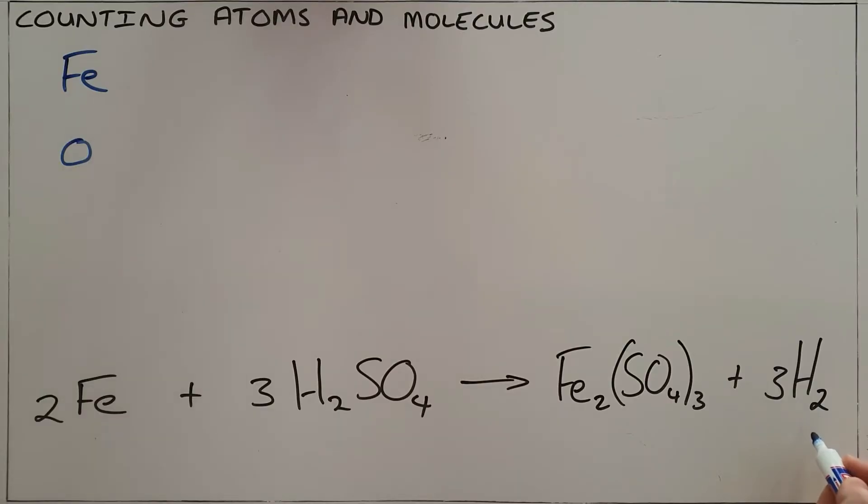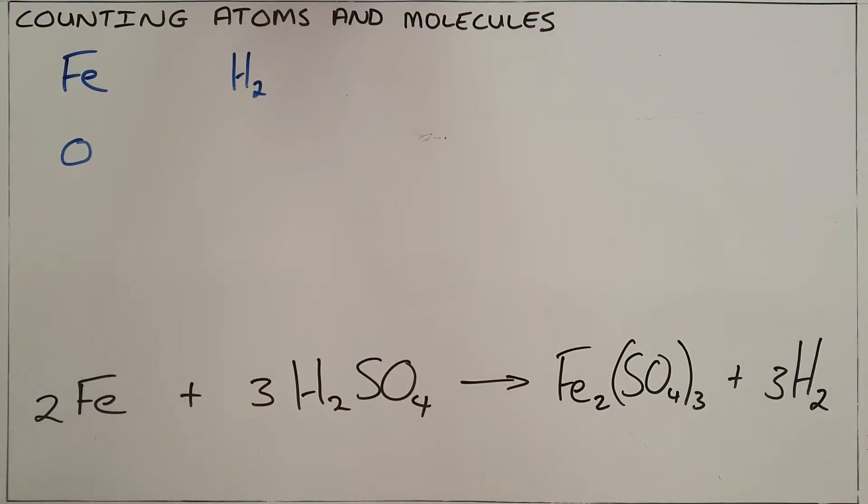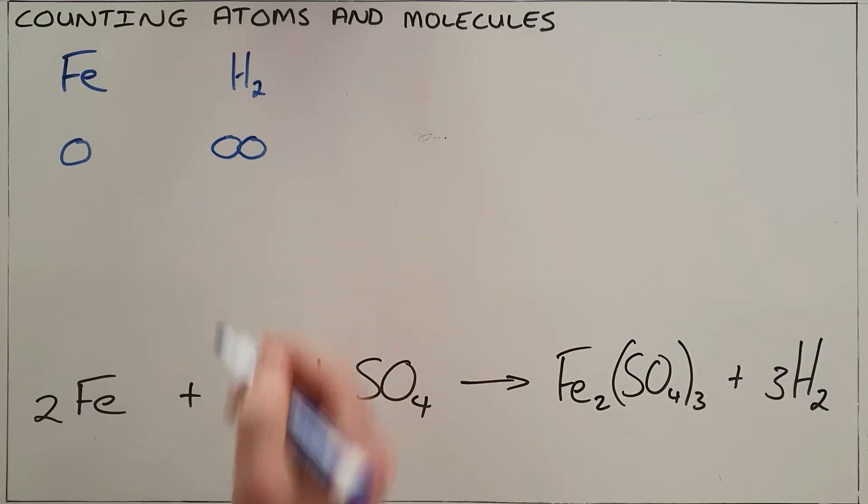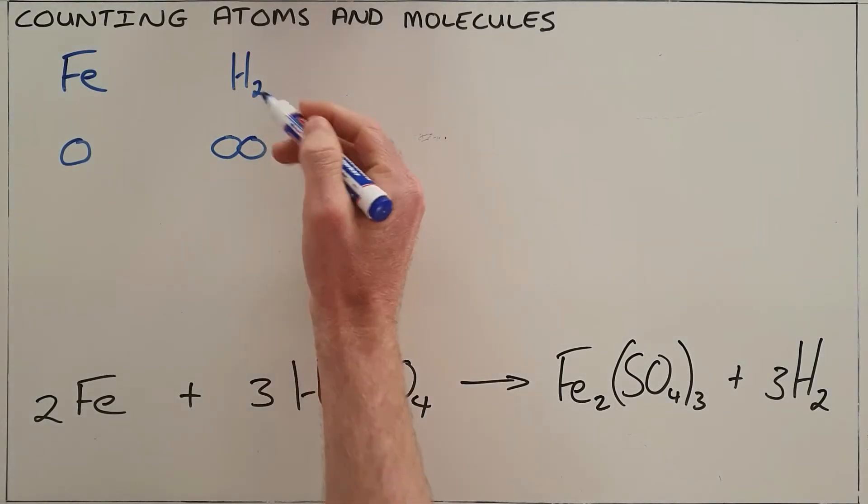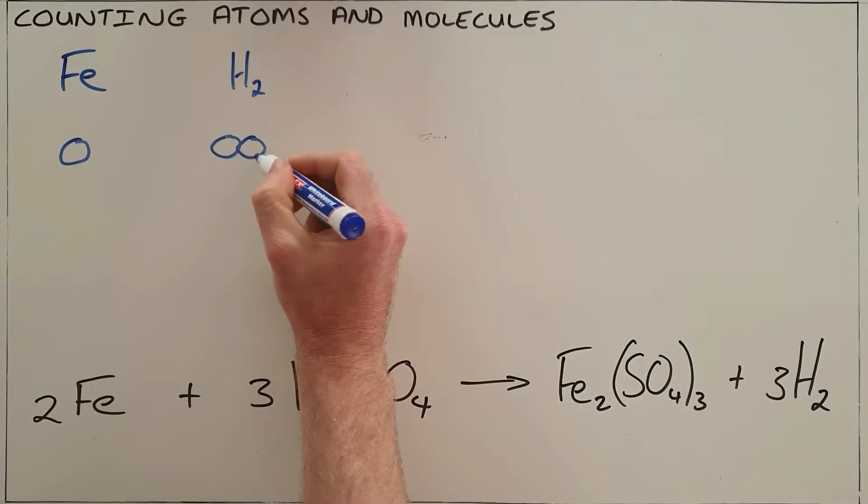Second, we've got hydrogen, which as we can see is H2, which means that is a diatomic element. Diatomic elements are elements that are always found bonded to themselves in nature, and that forms a diatomic molecule that has two hydrogen atoms bonded to each other.